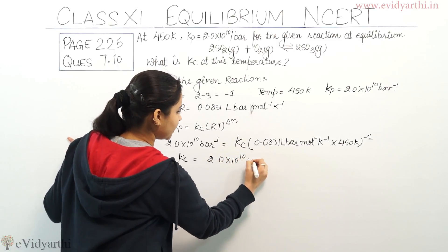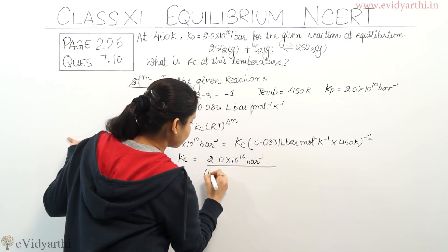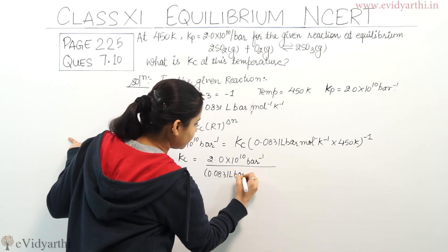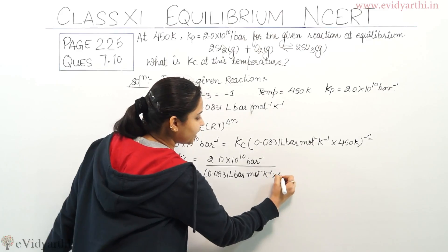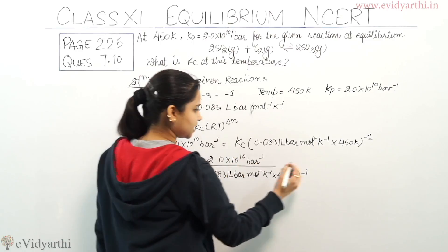So Kc = 2.0 × 10^10 bar^-1 divided by [0.0831 liter bar mol^-1 K^-1 × 450 K]^-1, which means we take the bracket to the power of -1.